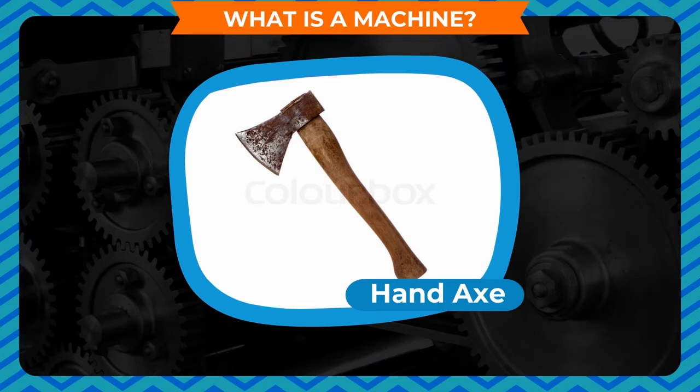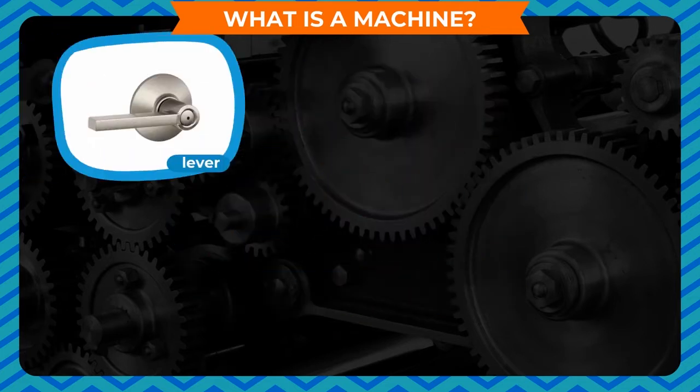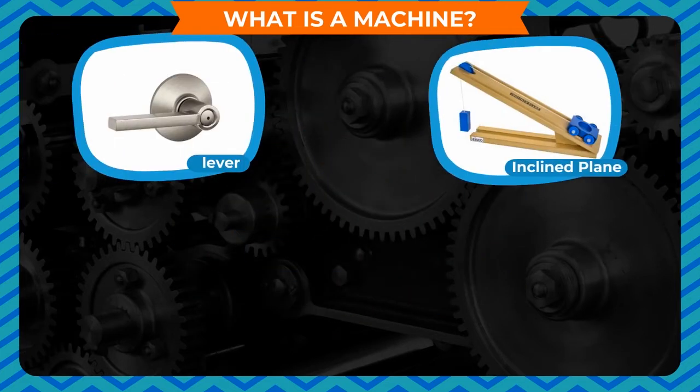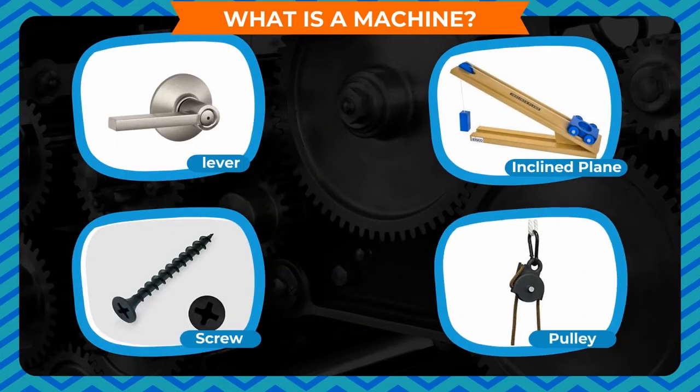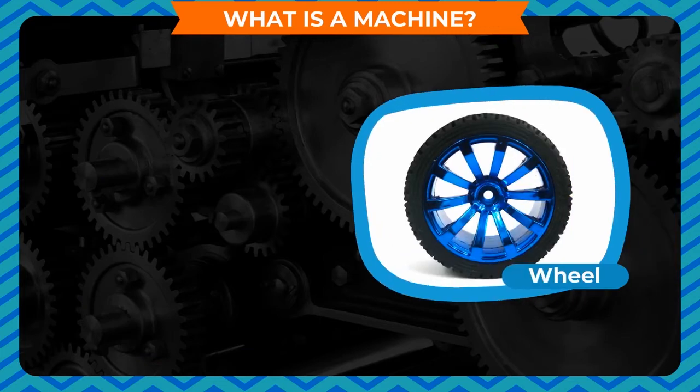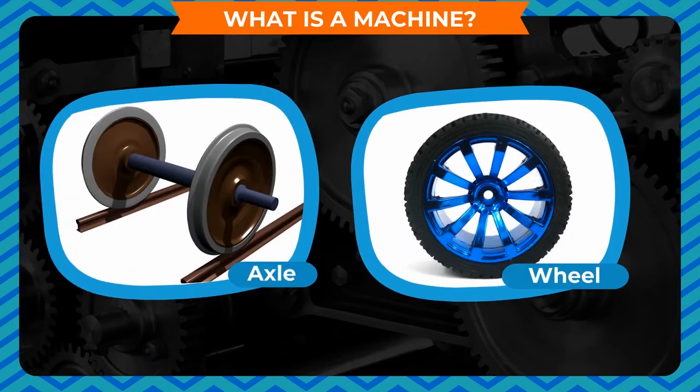Simple machines have a few parts only and are easy to use. The basic types of simple machines are lever, inclined plane, screw, pulley, wheel, and axle.